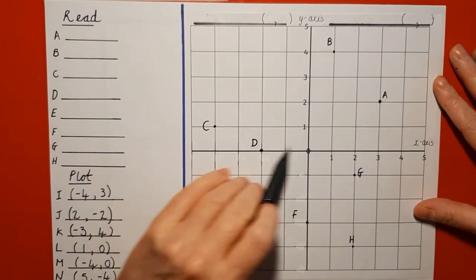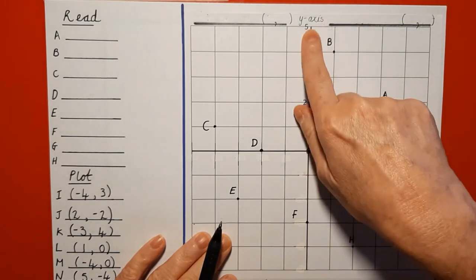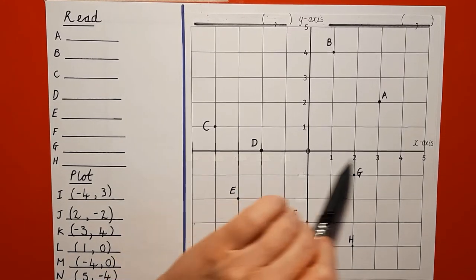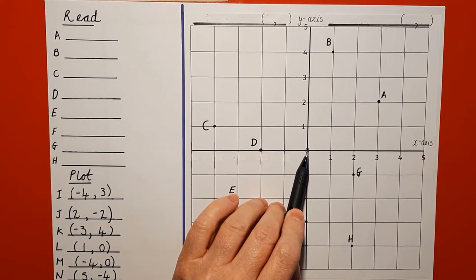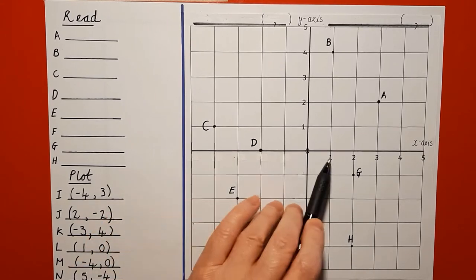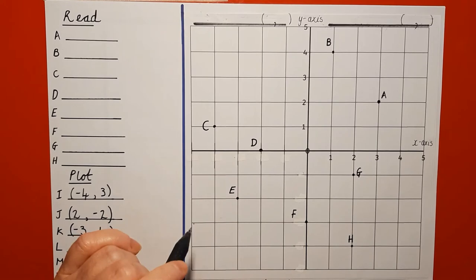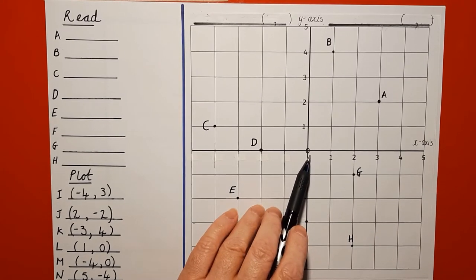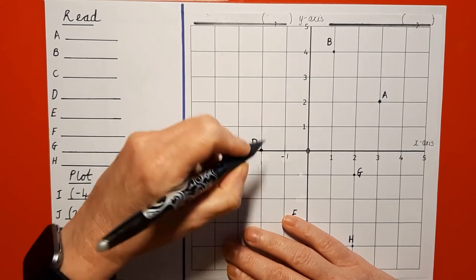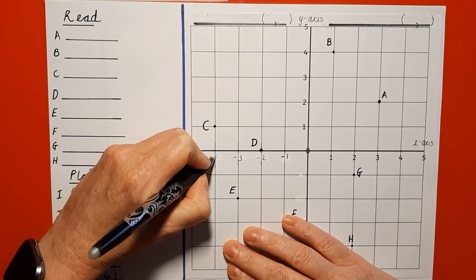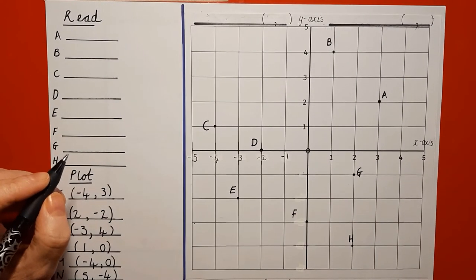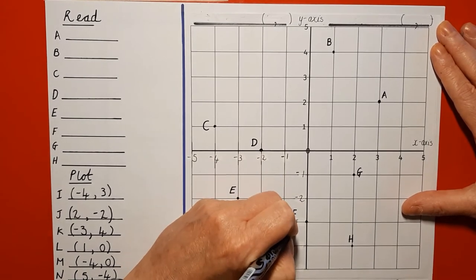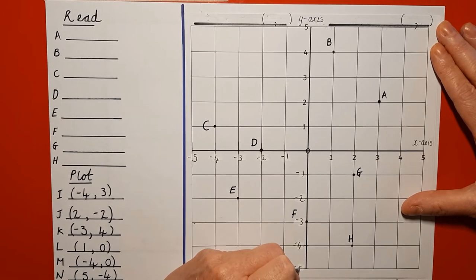We still have the horizontal X axis and the vertical Y axis. However, from your Year 5 work you know that numbers do not stop at zero when counting backwards — we call those negative numbers. On the X axis, counting back from zero we get negative one, negative two, negative three, negative four, and negative five. On the Y axis, counting down from zero we get negative one, negative two, negative three, negative four, and negative five. If this grid was bigger, the numbers would extend even further.